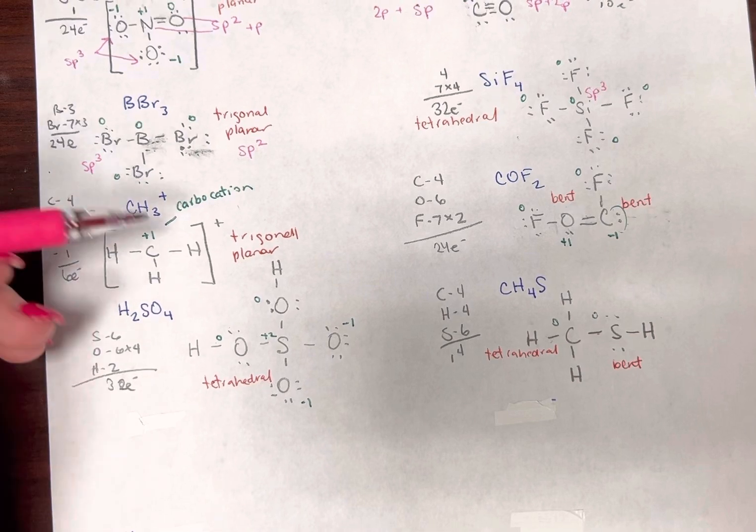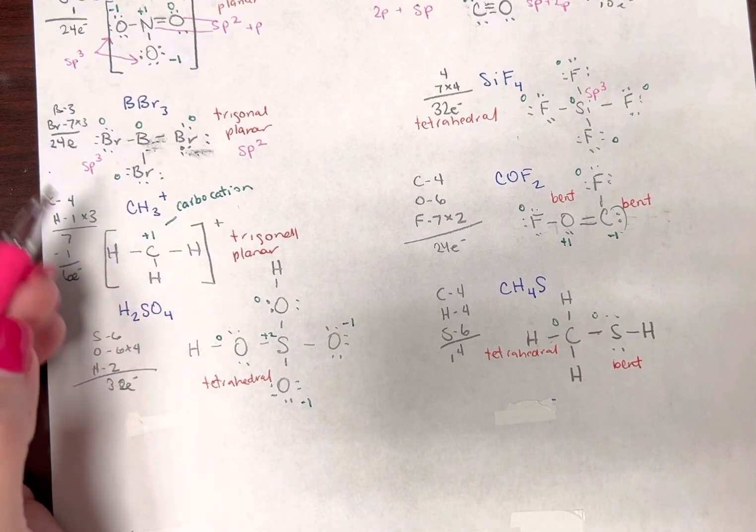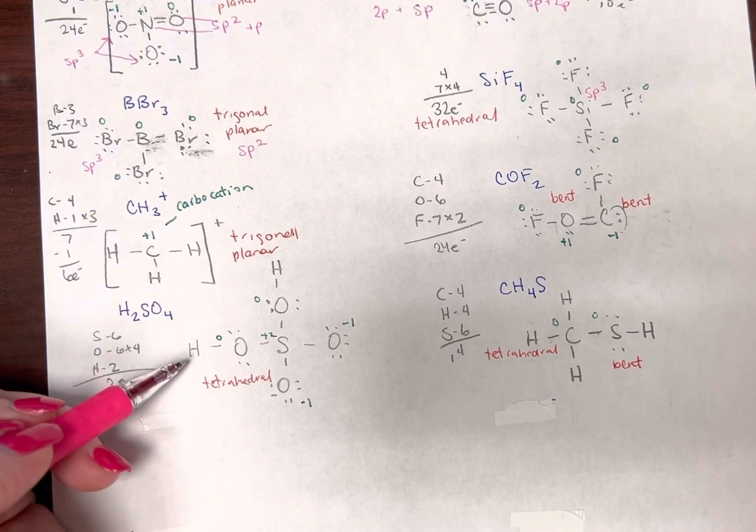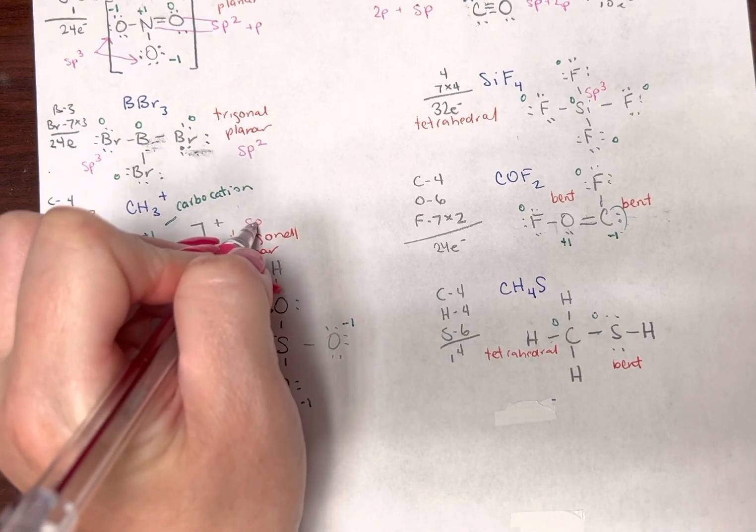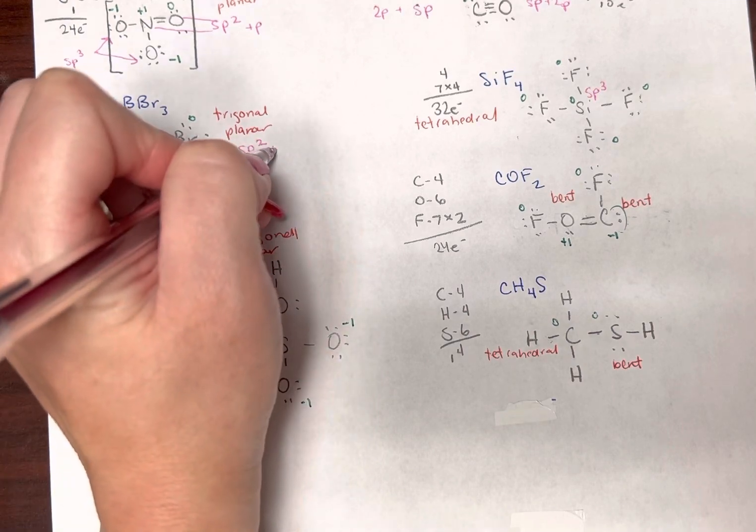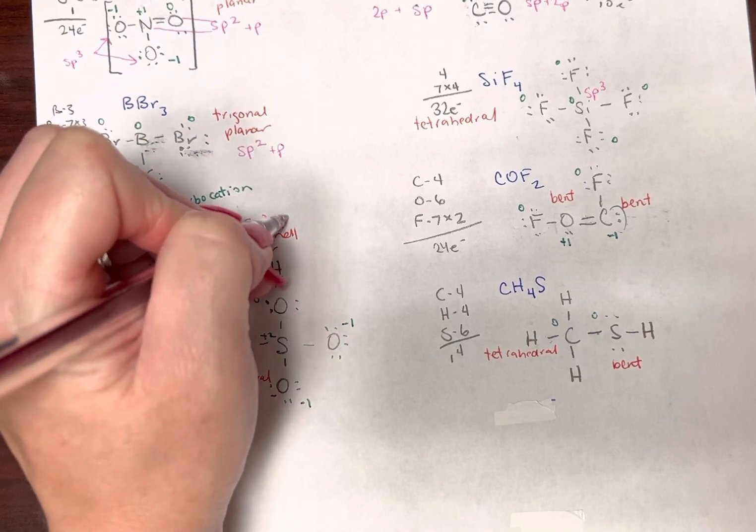All right, let's look at this one. Here carbon has one, two, three friends. So that's going to have to be sp2. And we can say an unhybridized p orbital if you want to.